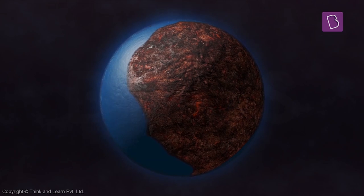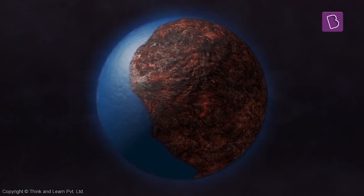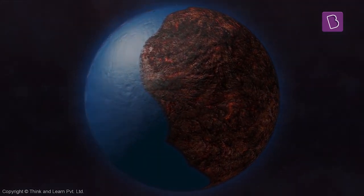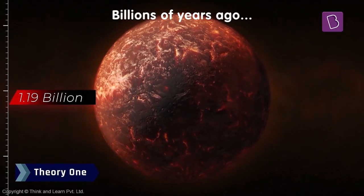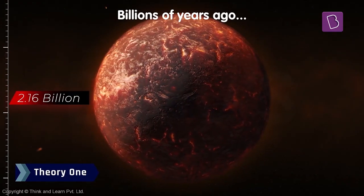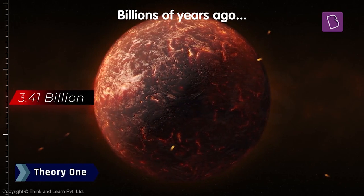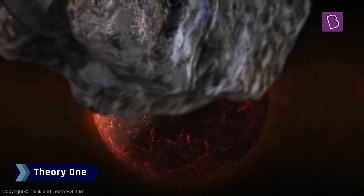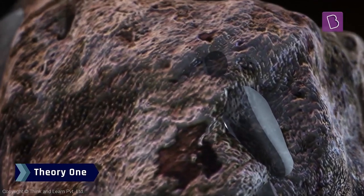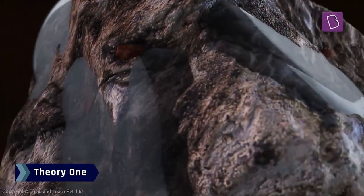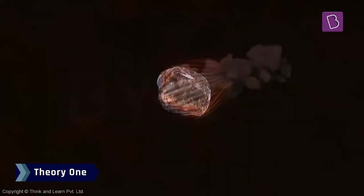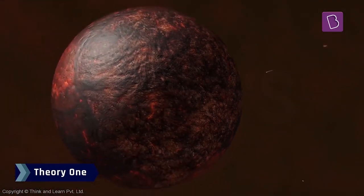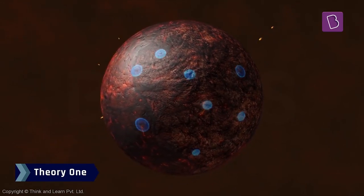But then scientists think that there could have been two ways in which water was formed on Earth, or rather two theories. Billions of years ago, when the Earth was still young and fiery, it was constantly bombarded by meteors and space rocks. And the first theory suggests that these rocks brought water to the Earth and deposited it here.